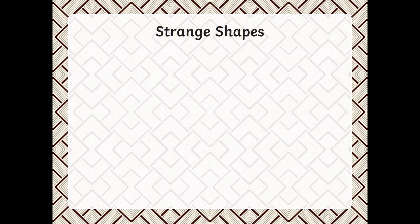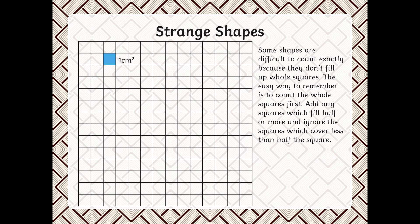Strange shapes. Some shapes are difficult to count exactly because they don't fill up whole squares. The easy way to remember is to count the whole squares first, add any square which fills half or more, and ignore the squares which cover less than half the square.